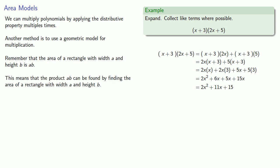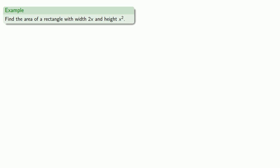This means that the product ab can be found by finding the area of a rectangle with width a and height b. For example, let's find the area of a rectangle with width 2x and height x squared. So let's draw a picture.